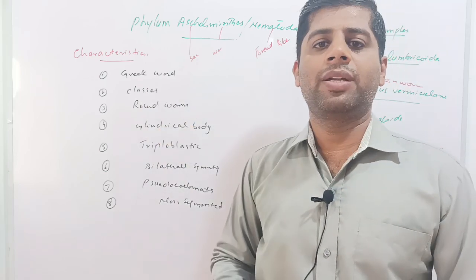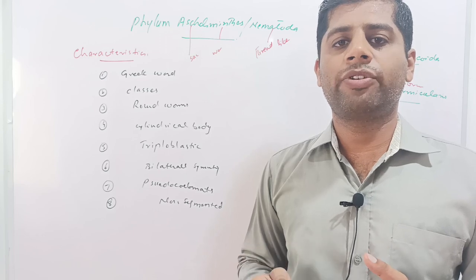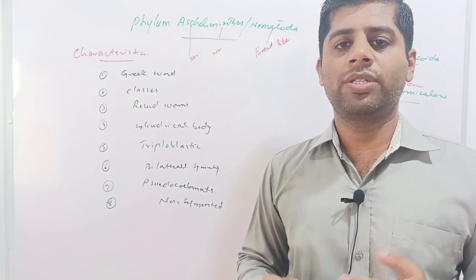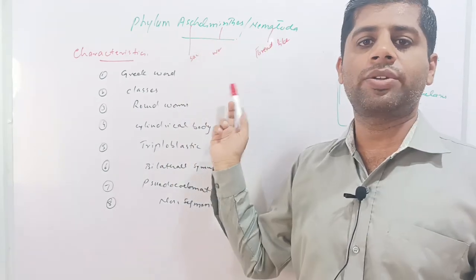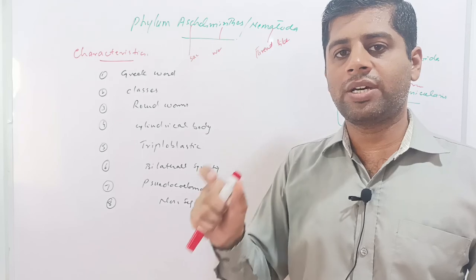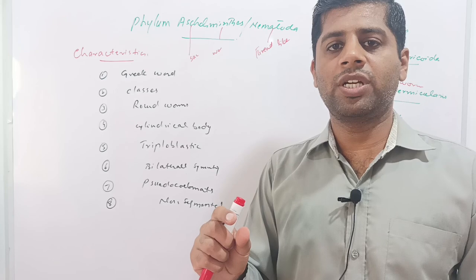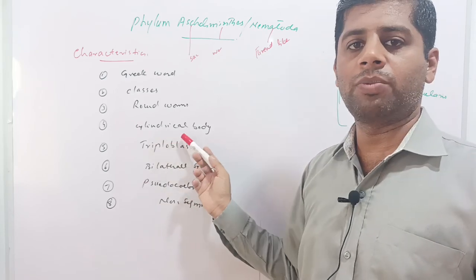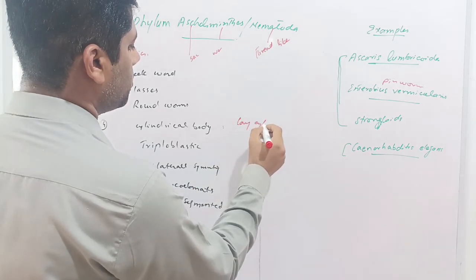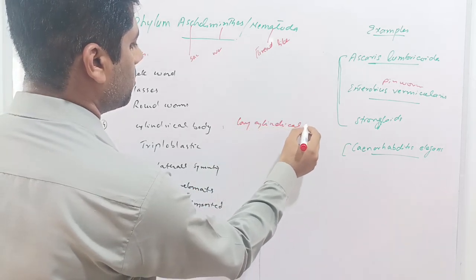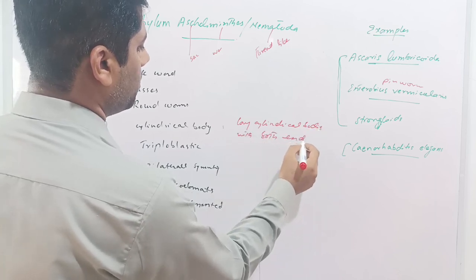There are five classes of phylum Aschelminthes: Gastrotricha, Rotifera, Kinorhyncha, Nematomorpha, and Nematoda. Out of these five, the most important class is Nematoda, and therefore this phylum is also called phylum Nematoda. These are also called roundworms due to their cylindrical body shape — they have long cylindrical bodies with both ends tapered.